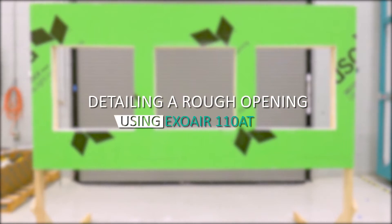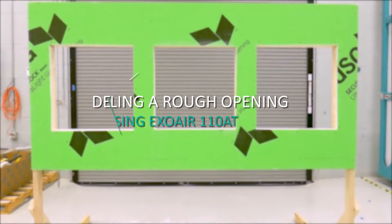To properly flash a rough opening on your wall assembly, Trimco recommends one of the following three options.